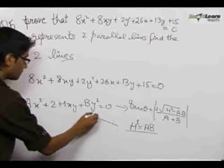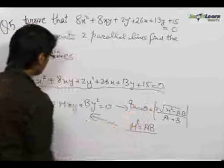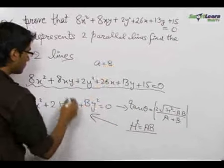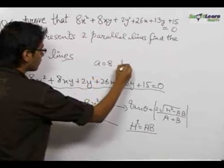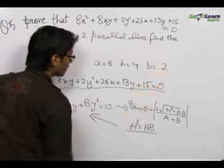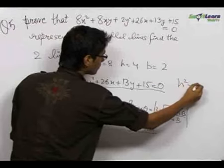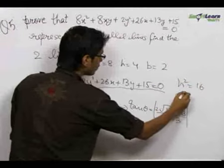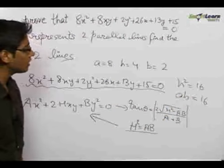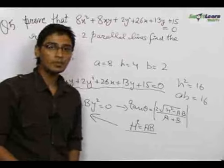This condition applies here as well. We identify a = 8, 2h = 8 so h = 4, and b = 2. Clearly, h² = 16 and ab = 16 as well. So h² = ab, and we can confidently say that the two lines are parallel to each other.